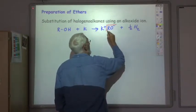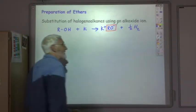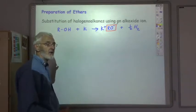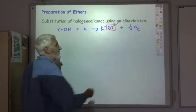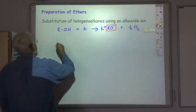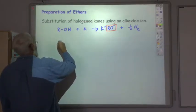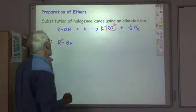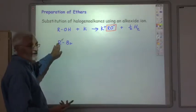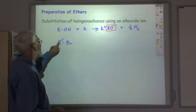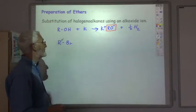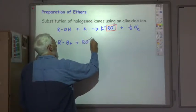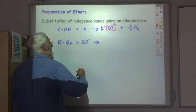So that RO minus is the alkoxide ion and that can act as a nucleophile in the nucleophilic substitution for haloalkane. So haloalkane is, we'll call it R dash. So this is just again could be a methyl, ethyl, propyl group - may or may not be the same as that R group. And we react that with our alkoxide.